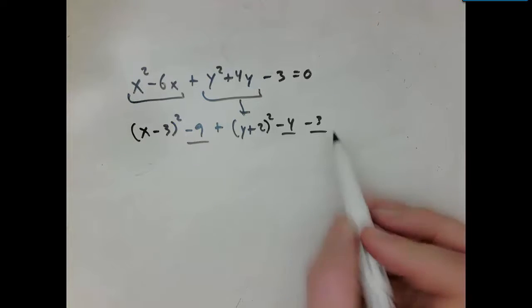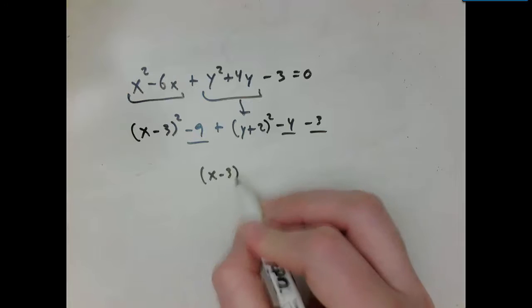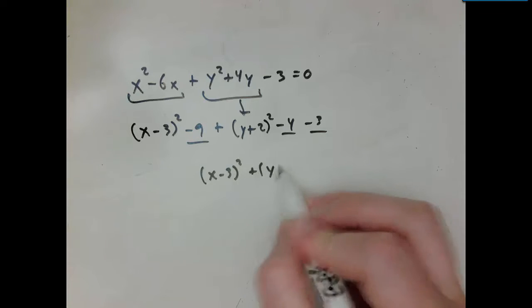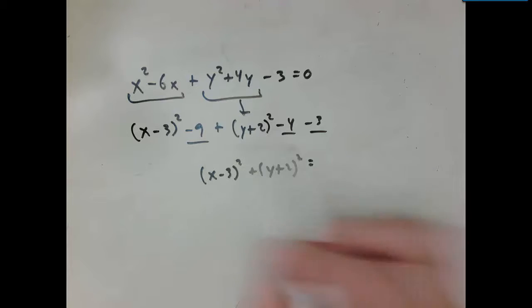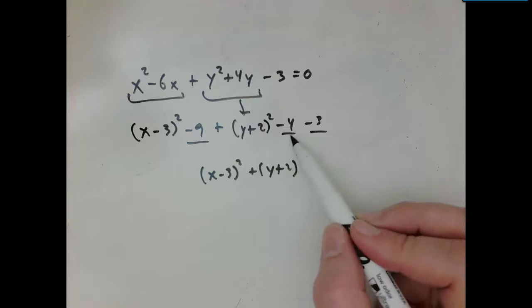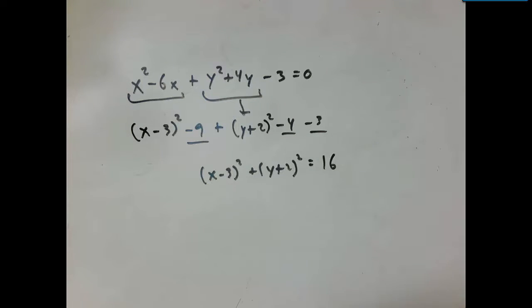So if I combine all my constant terms and move them to the other side, I'll have x minus 3 squared plus y plus 2 squared equals 9 plus 4 is 13 plus another 3 is 16. So I recognize now that this is a circle whose radius is 4 that's centered at 3 negative 2.